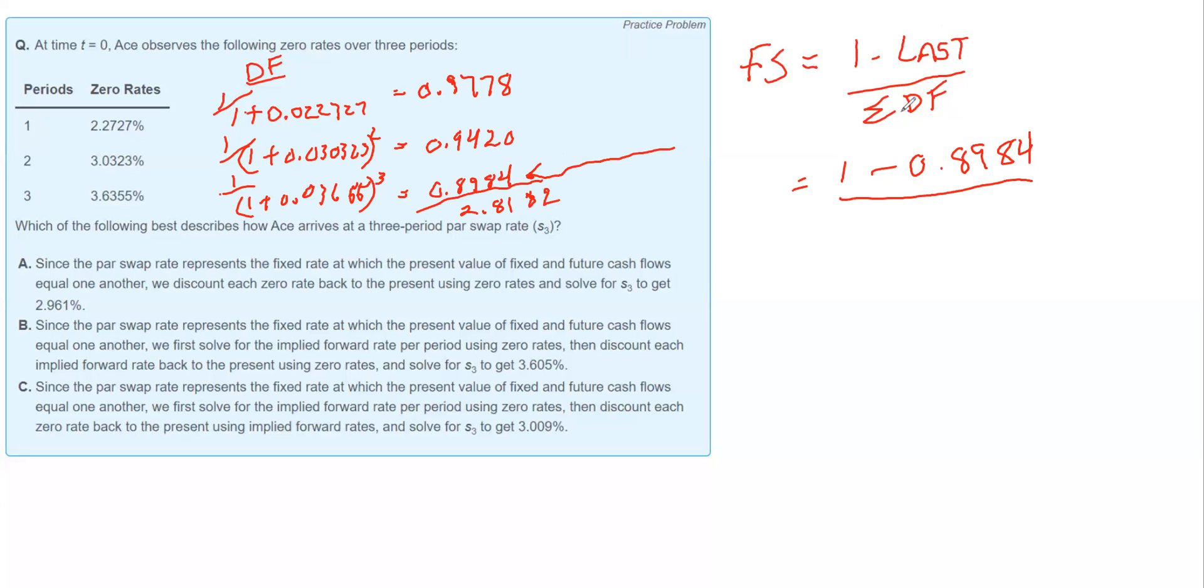Divide that by the sum of the discount factors, 2.8182. If we do this math, we end up with 0.03605. And if we multiply by 100, that gives us 3.605%. This is our fixed rate on the swap.